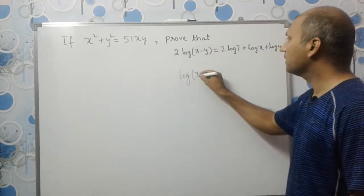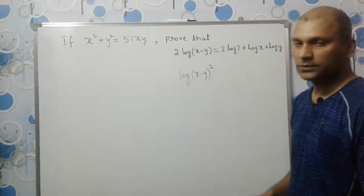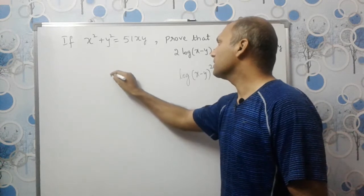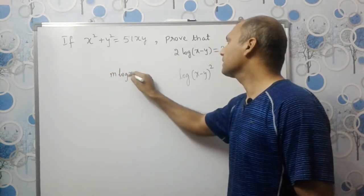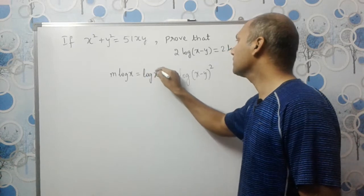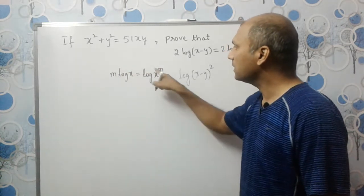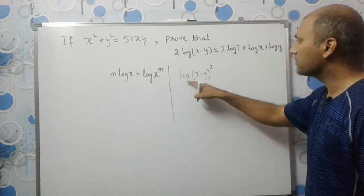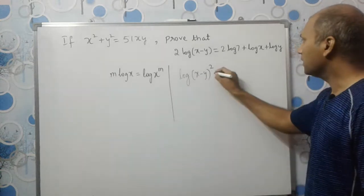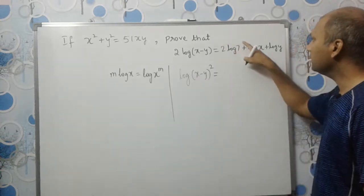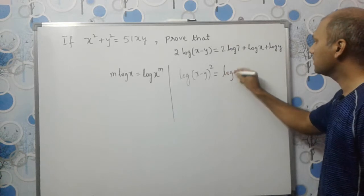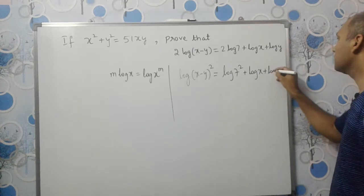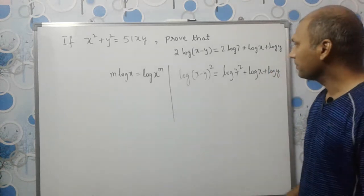It will become log(x - y)². We are using the identity m·log x = log(x^m), so the 2 goes as a power and it becomes log(x - y)². Using the same identity on the right side, 2 goes to give 7² and log x, log y remain as they are.